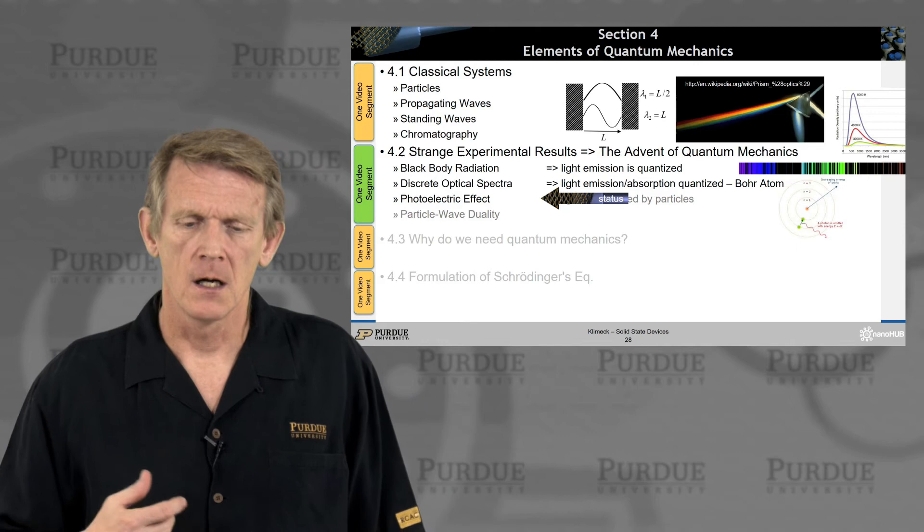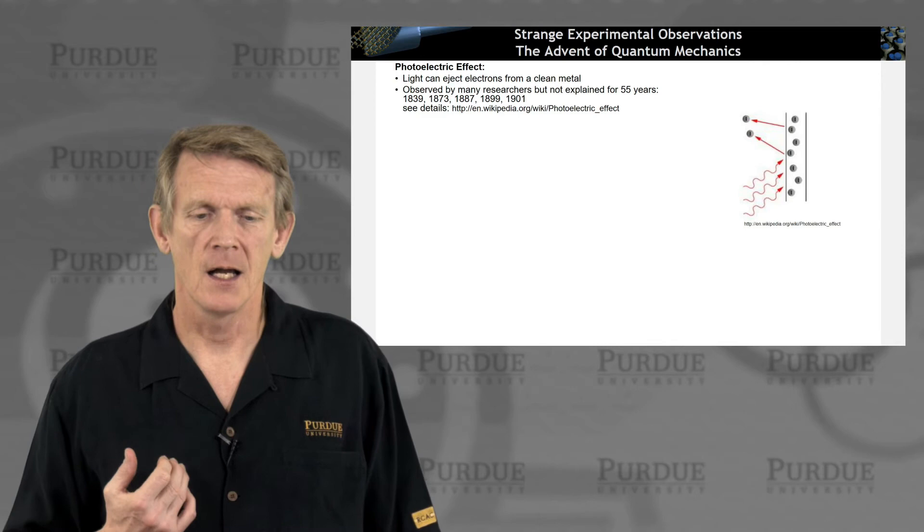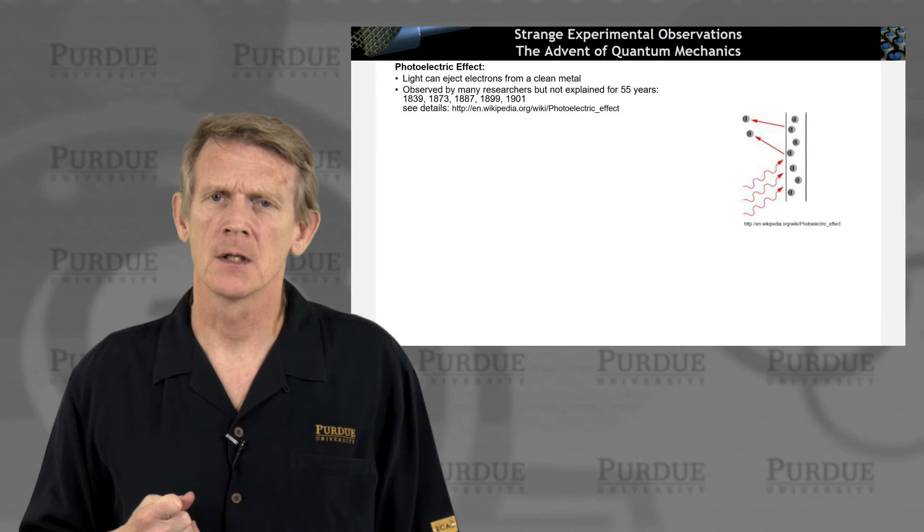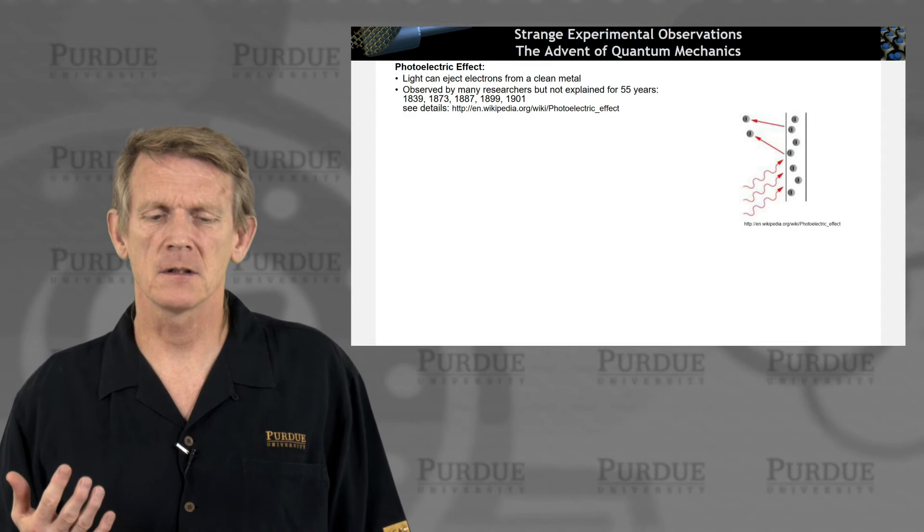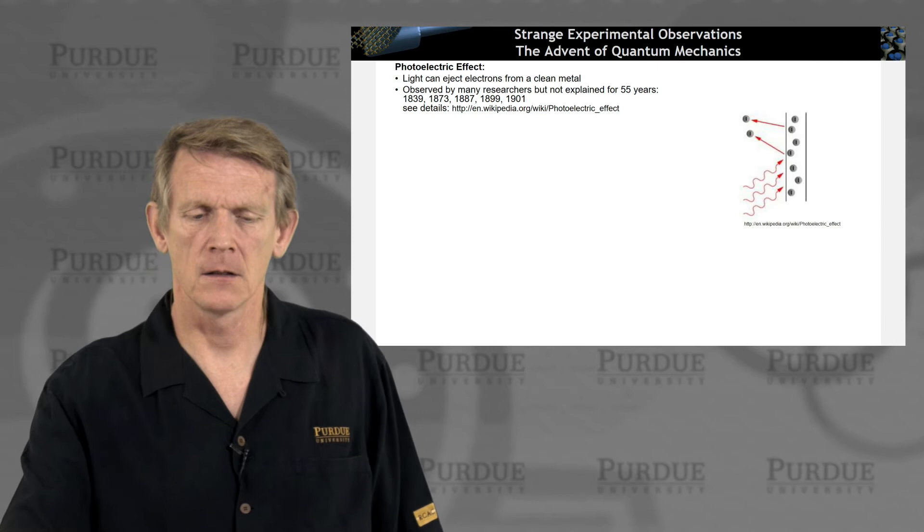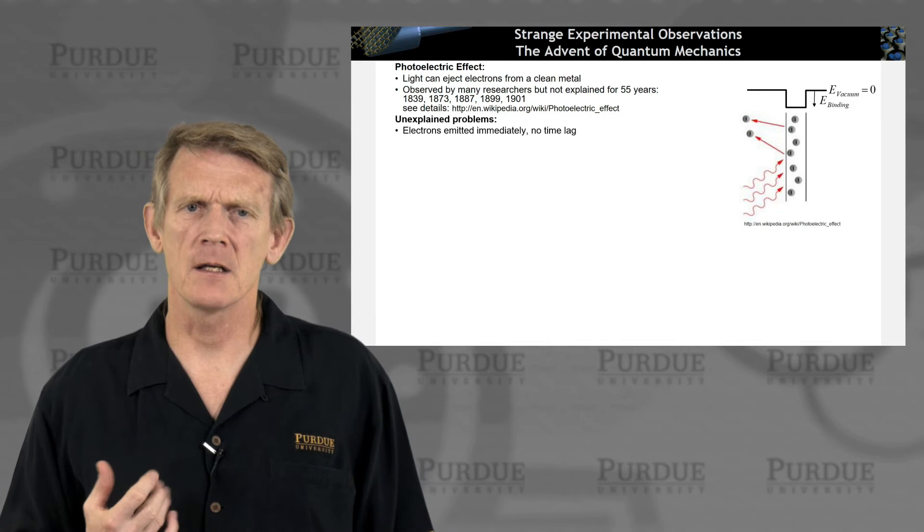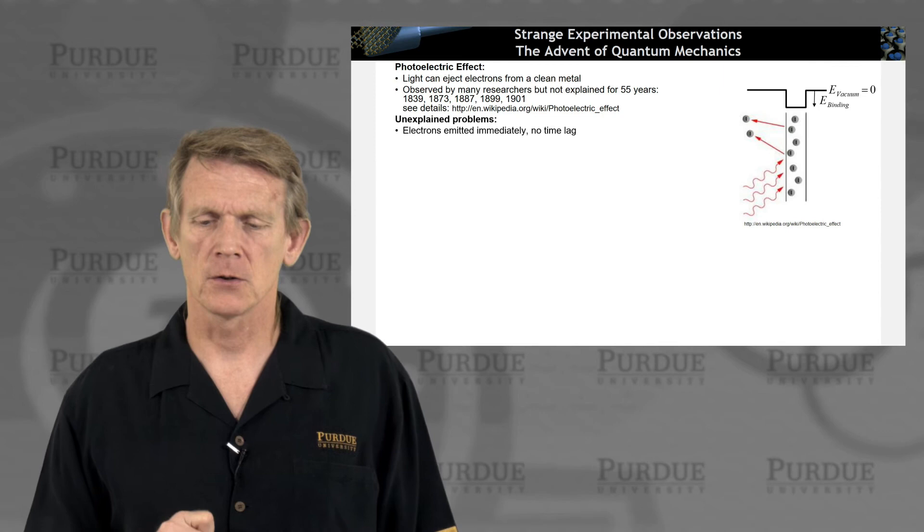All right. Let's get to the photoelectric effect that was also a long-standing puzzle for 55 years. People have observed light emission on clean surfaces. So, light can eject electrons from a clean metal. And that has been observed by many researchers and really not explained for 55 years. So, what are some of the unexplained problems that occurred? The interesting concept was that electrons were emitted immediately without any time lag.